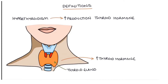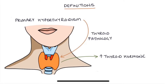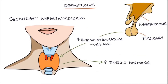Some key definitions: hyperthyroidism refers to increased production of thyroid hormones, which are the end result of the thyroid gland. Primary hyperthyroidism is a disease of the thyroid gland itself — there is some thyroid pathology causing increased thyroid hormones. Secondary hyperthyroidism is not a pathology of the gland itself; the problem lies in the pituitary or, less likely, the hypothalamus, which increases thyroid stimulating hormone.